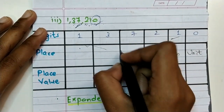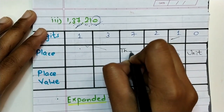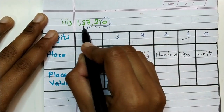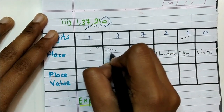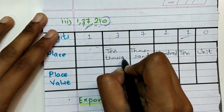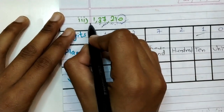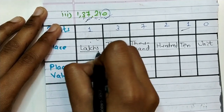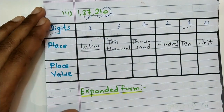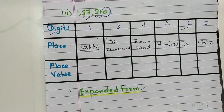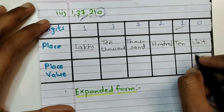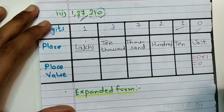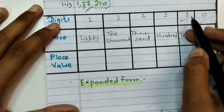Place of seven is thousands place. Place of three is ten thousands. And lastly place of one is lakhs. Now we create place values: place value of zero equals zero into one, which is zero. Place value of one equals one into ten, which is ten.